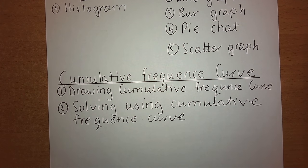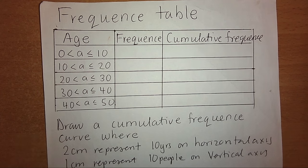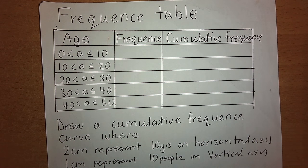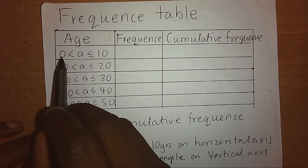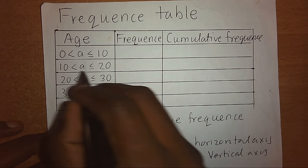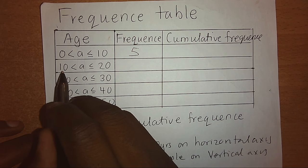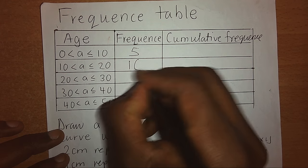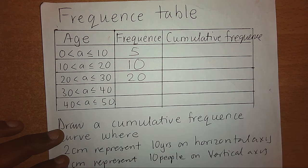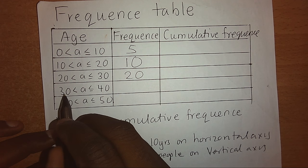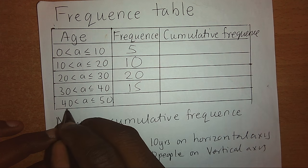Given a frequency table, this table can have some frequencies. In a group of age — this is what we call a class — from 0 to 10 we might have 5 people; from 10 to 20, for example, 10 people; from 20 to 30 we can have 20 people; those aged 30 to 40 we can have 15; and finally we can have 10.